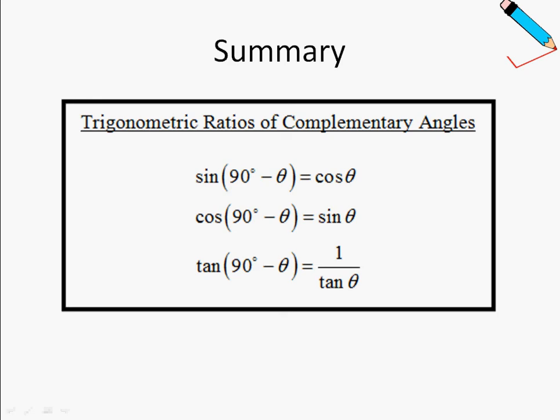we have learned about the trigonometry ratios of complementary angles. Let me just highlight once again that complementary angles are angles that add up to 90 degrees. Okay, so complementary angles are angles that add up to 90 degrees.